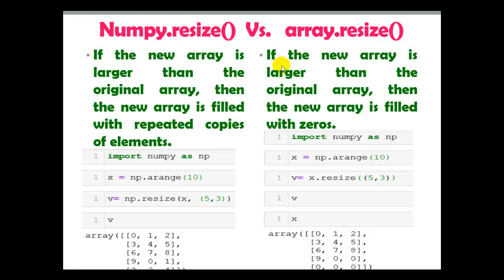Now array.resize: if the new array is larger than the original array, then the new array is filled with zeros — that you can see with resize 5 cross 3. Here you can see 1, 2, 3, 4, 5, 6, 7, 8, and 9 — the same number of elements — but remaining positions are zero because we have 10 elements total but want a 2D array with 15 elements (5 cross 3), so it fills with zeros. This is the difference between numpy.resize and array.resize.